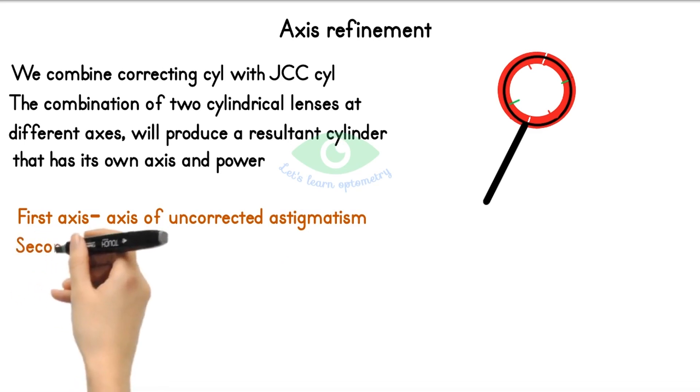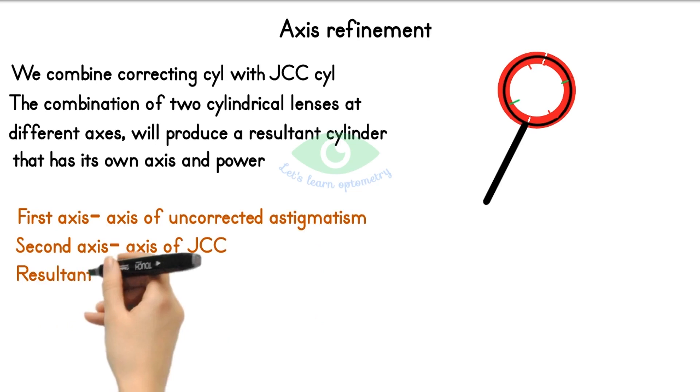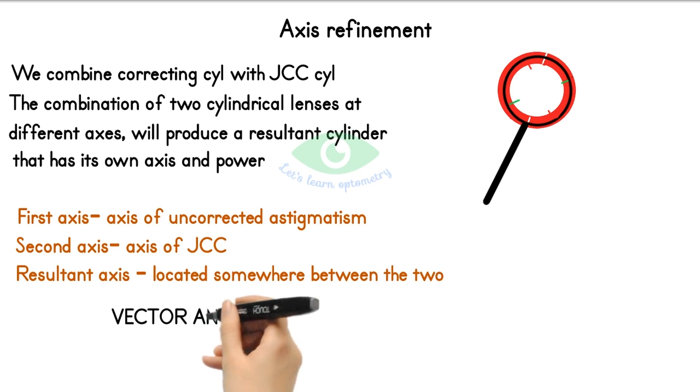First axis: axis of the uncorrected astigmatism. It is the resultant of the patient's true astigmatic axis and the axis of the correcting cylindrical lens that is placed in the trial frame. Second axis: axis of the JCC. Resultant axis: it is located somewhere between the first and second axis.